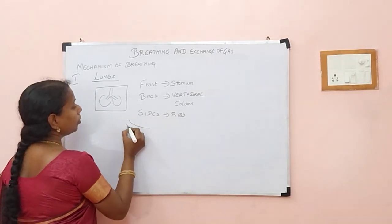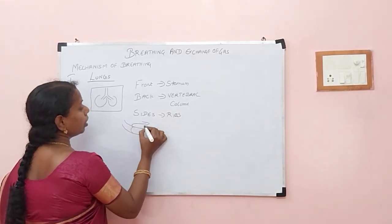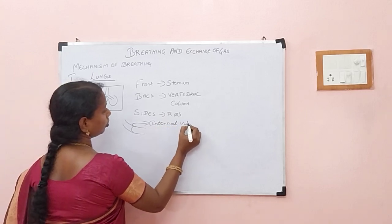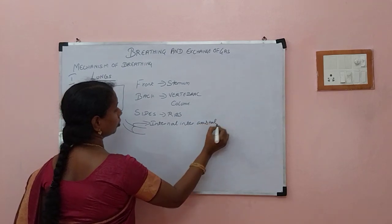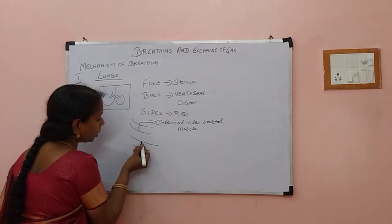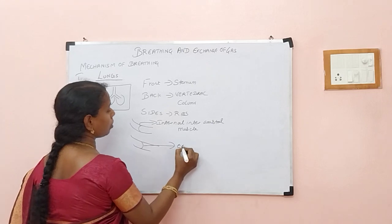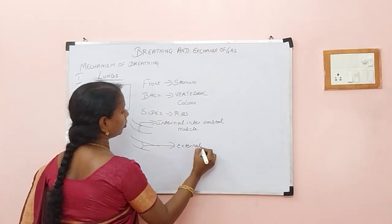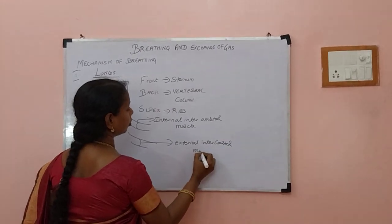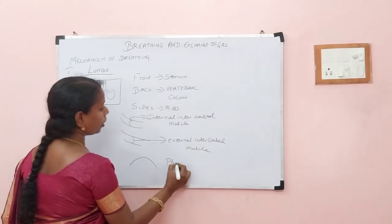If you see the ribs — when the ribs are connected inwardly, it is called the internal intercostal muscle. Similarly, if the ribs are connected externally, it is called the external intercostal muscle. The muscle which we find in the ribs, we call it as phrenic muscle.